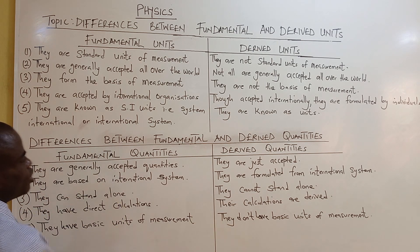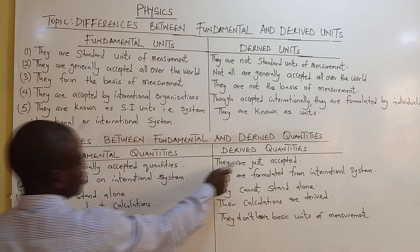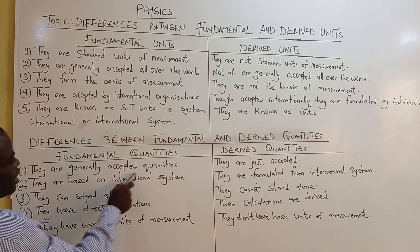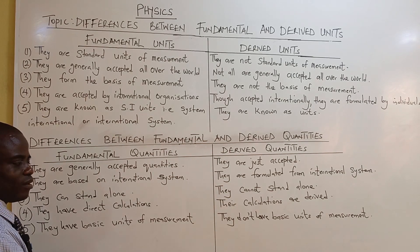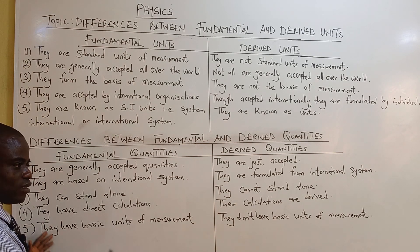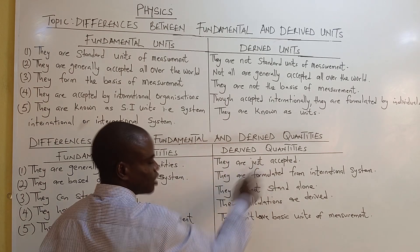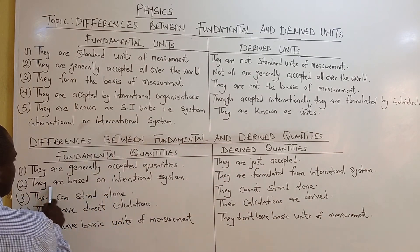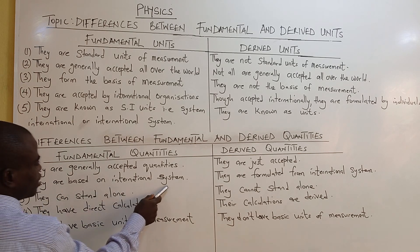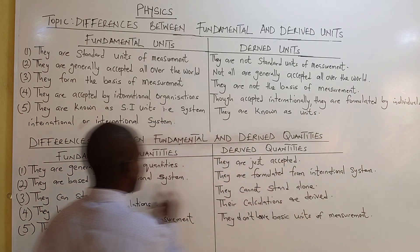Now let's look at the differences between fundamental and derived quantities. Fundamental quantities are generally accepted quantities everywhere — for example, time and mass are accepted everywhere. Derived quantities are just accepted quantities because they are formulated by individuals. Fundamental quantities are based on the international system, while derived quantities are formulated from the international system.